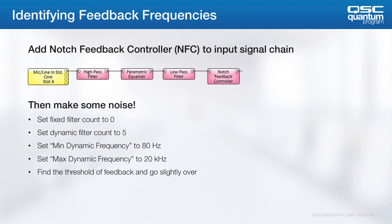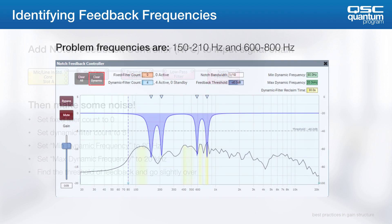If you're encountering feedback, you can address it using an RTA in the space, or just by ear. But the Notch Feedback Controller component is a perfect tool for figuring out exactly what frequencies you're feeding back. You can put this into your signal path and follow these instructions to force the system into feedback. First, set a fixed filter count to 0 and set a dynamic filter count to 5. Then set the minimum dynamic frequency to 80 Hz and the maximum dynamic frequency to 20 kHz. Finally, find the threshold of feedback and go slightly over. The resulting feedback frequencies will be easy to identify in the NFC block.